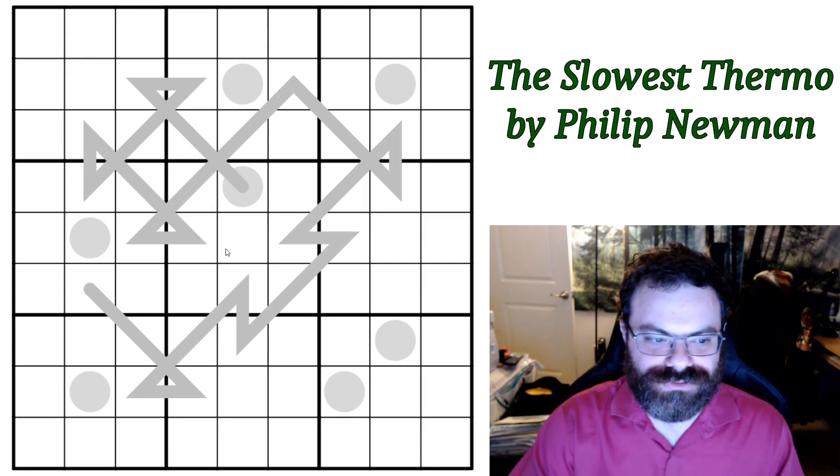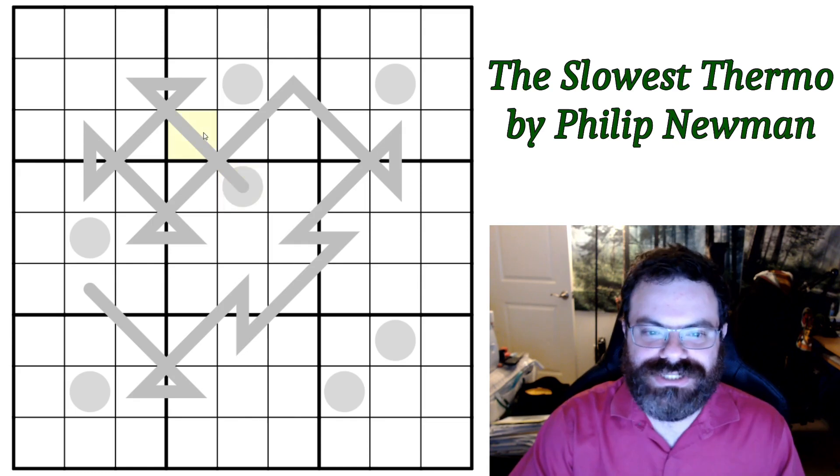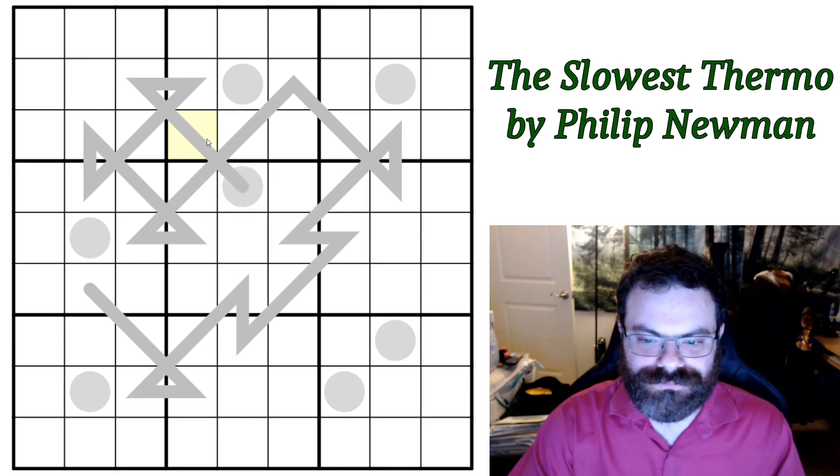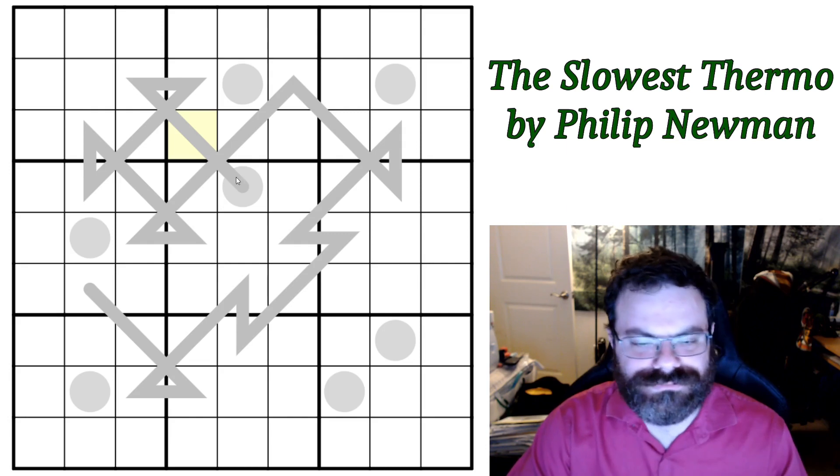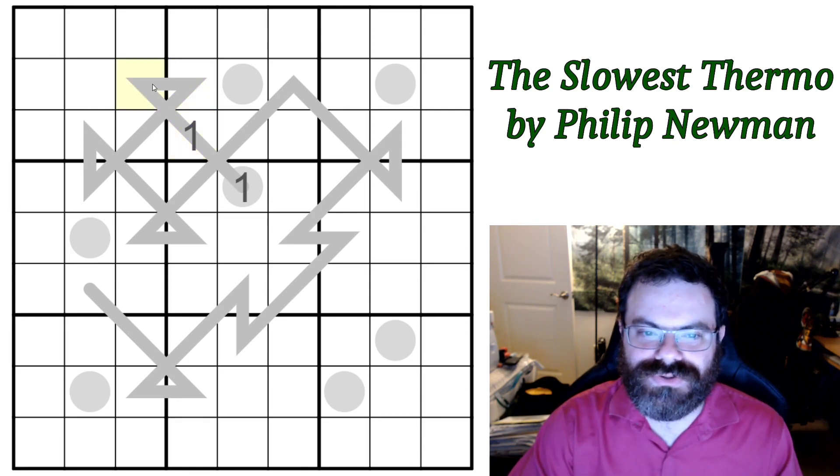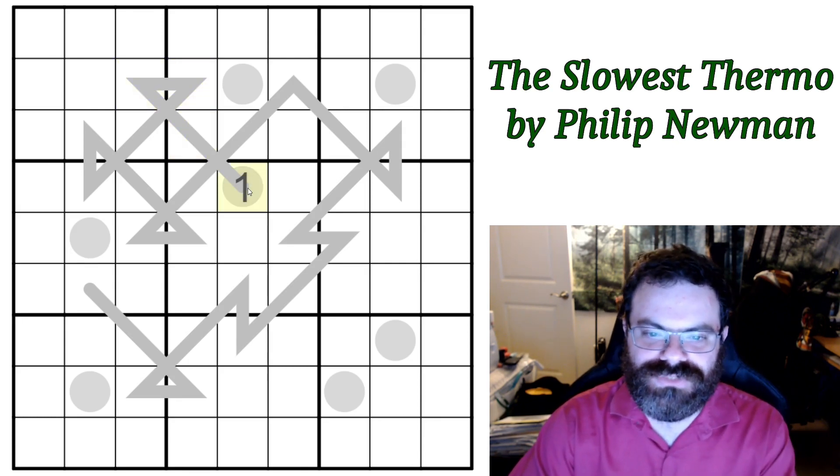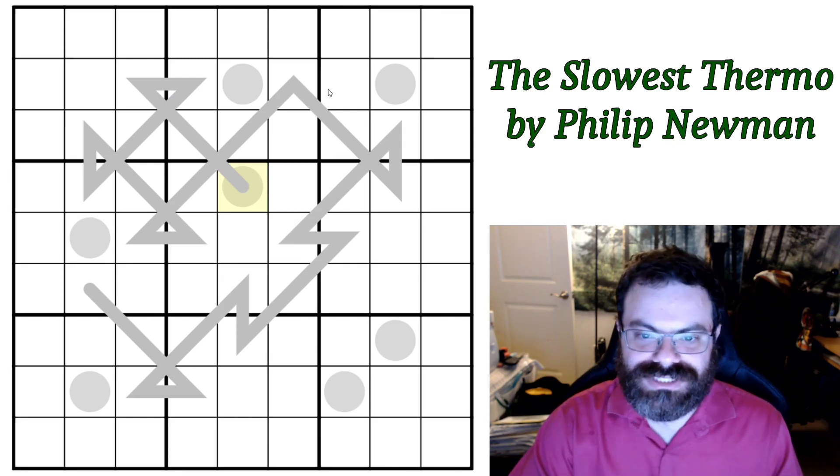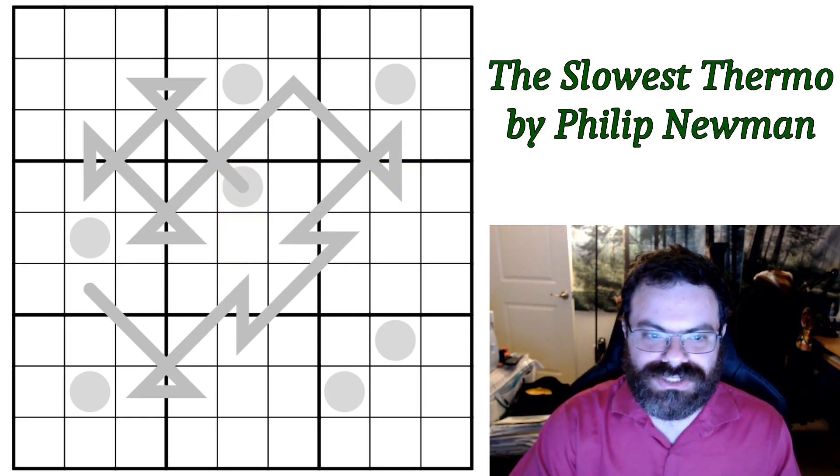Well, we do have normal Sudoku rules. And digits along a thermometer must not decrease from the bulb end. So we can repeat a number. You can see it goes diagonal a lot, so we're probably going to be doing a lot of repeats. So as long as it doesn't break any other Sudoku rules, like this diagonal here, we can put a 1 here and then another 1 here. And then we can keep putting 1s until Sudoku rules don't allow it. And then once we move up to 2, we have to stay at 2, etc. until the end. So that's a slow thermometer.